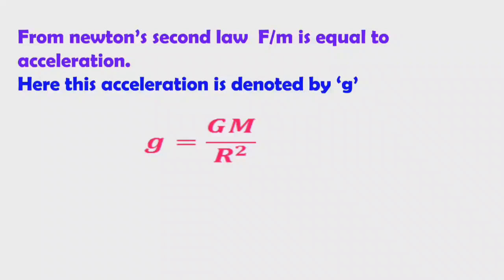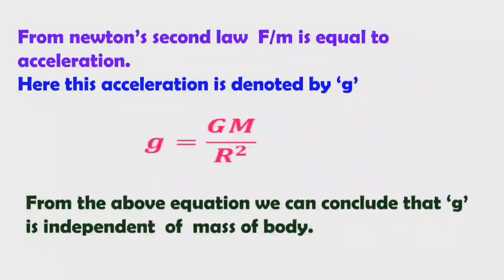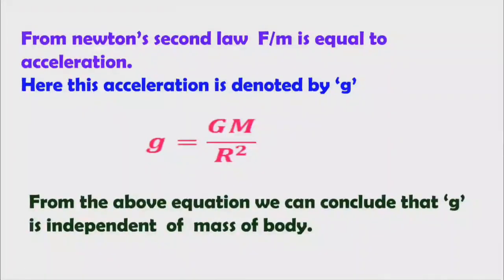From this equation we can conclude that small g is independent of the mass of the body — in the formula small g equals G M by R square, there is no small m. That is why small g is independent of the mass of the body. Small g depends on the mass of the earth and it depends on the distance of the object from the center of the earth.